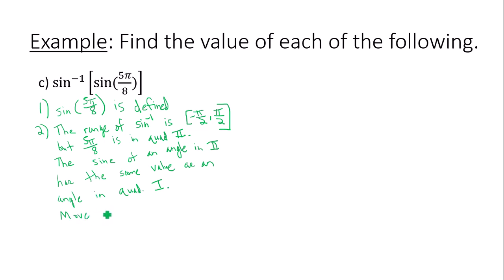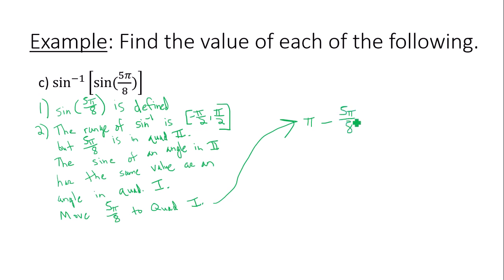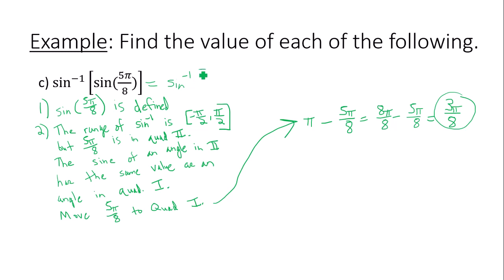I need to move 5π/8 to quadrant 1 by finding its reference angle. So I compute π minus 5π/8, which is 8π/8 minus 5π/8, giving me a quadrant 1 angle of 3π/8. Since sine of 5π/8 and sine of 3π/8 give the same answer, we replace 5π/8 with 3π/8.